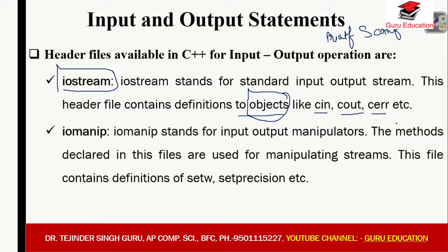In C we use functions like printf and scanf, but in C++ we use objects like cin, cout, and cerr. Another header file is iomanip — which stands for input output manipulators. The methods declared in this file are used for manipulating streams. This file contains definitions like setw, setprecision, etc.